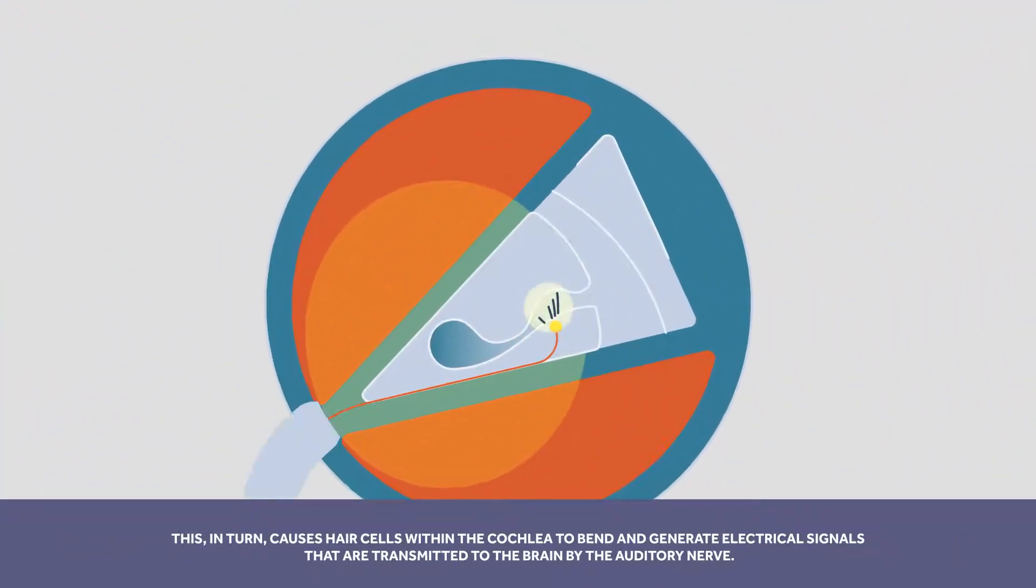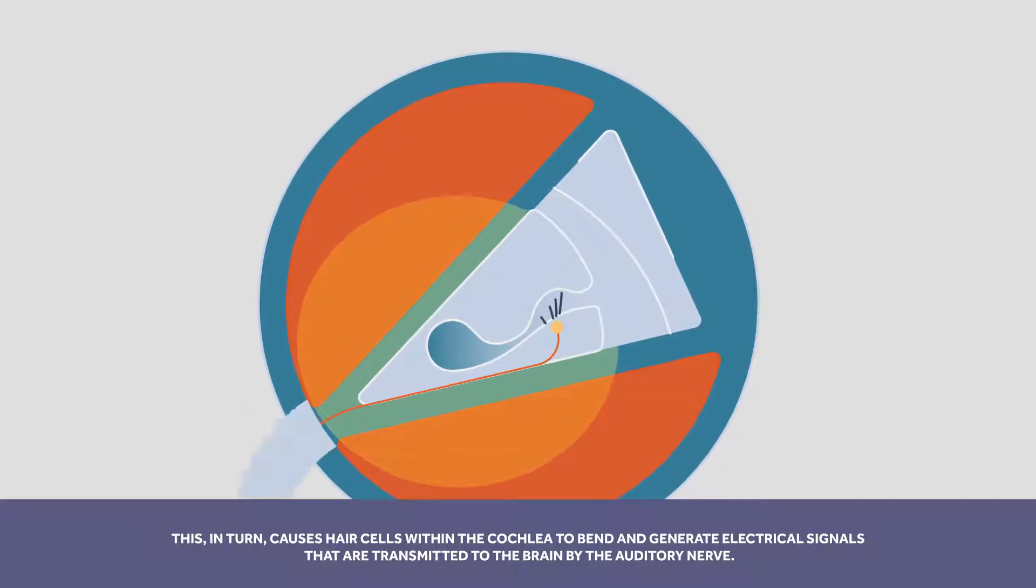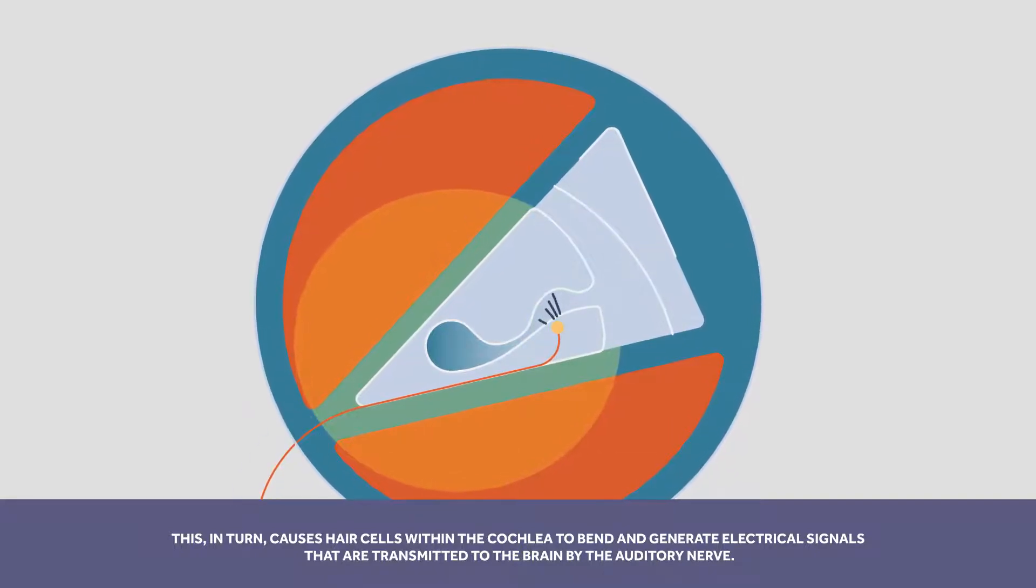This, in turn, causes hair cells within the cochlea to bend and generate electrical signals that are transmitted to the brain by the auditory nerve.